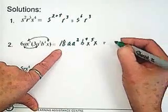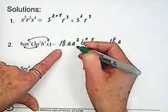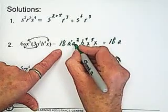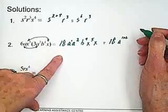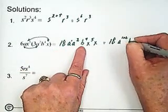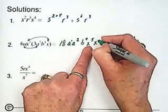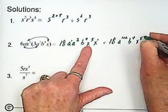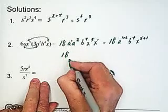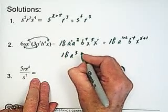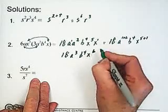So we have a to the 1 times a squared. So this becomes a to the 1 plus 2. We have b to the 4 and x to the 5 and x to the 1. So this is 5 plus 1. So we end up with 18a cubed b to the 4th x to the 6th.